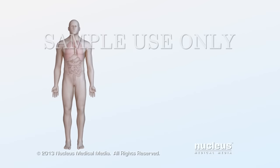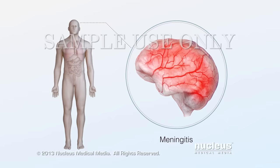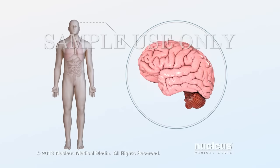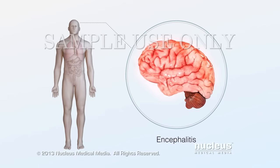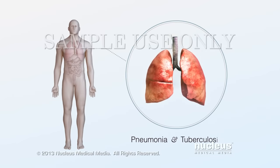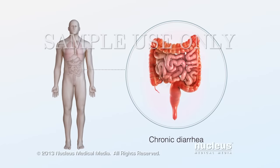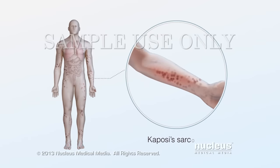Some of the common AIDS-related opportunistic infections are: inflammation of the tissues covering your brain and spinal cord, called meningitis; inflammation of your brain, called encephalitis; respiratory illnesses such as pneumonia and tuberculosis; intestinal illnesses such as chronic diarrhea caused by infectious parasites; and cancers such as Kaposi's sarcoma and non-Hodgkin lymphoma.